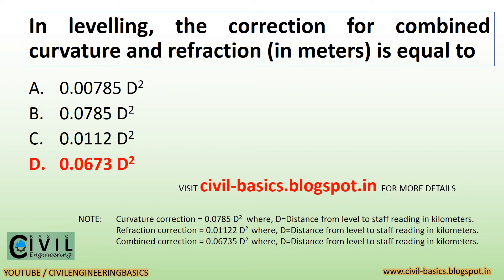In leveling, the correction for combined curvature and refraction, in meters, is equal to 0.0673 d-squared.